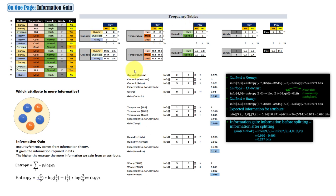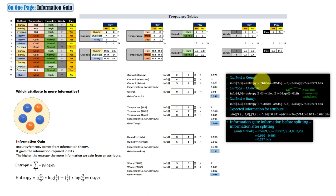Once we have the frequency table, we can start calculating the information gain. First, let's look at the outlook attribute. For sunny, we have two yeses and three nos, giving five total. The entropy is: minus two-over-five times log(2/5) minus three-over-five times log(3/5), which equals 0.971 bits. For overcast, we have four yeses and zero nos, so the entropy of one and zero is zero bits, since log(1) equals zero and zero times log(0) is treated as zero.